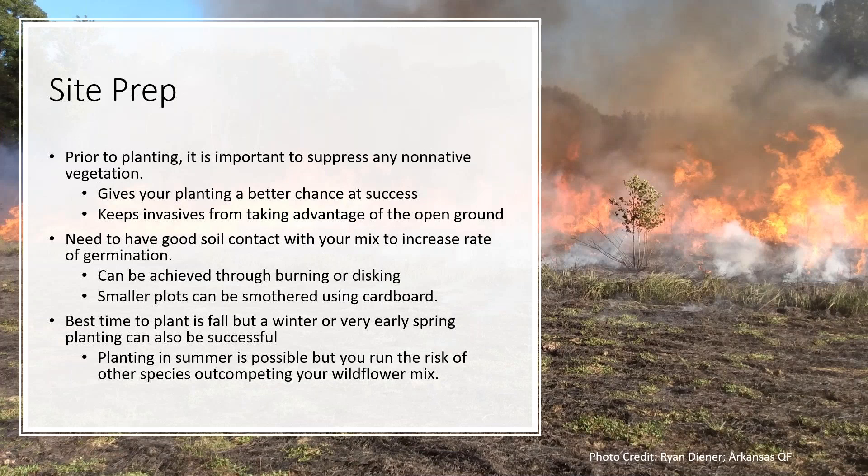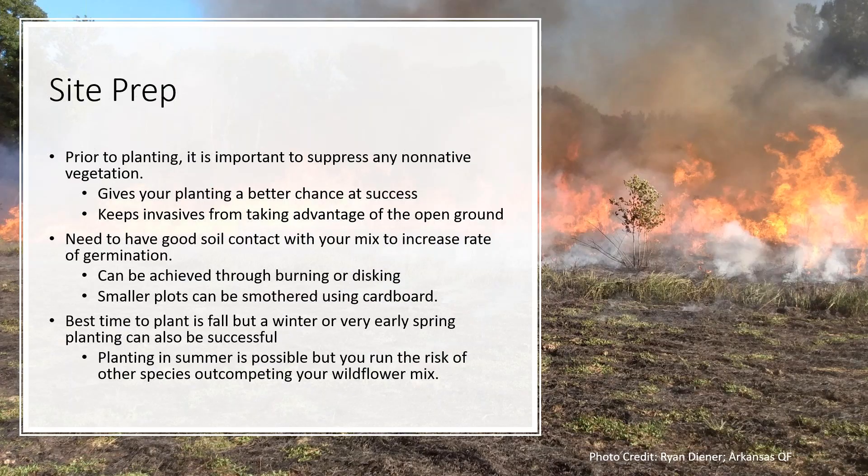Smaller pollinator plantings placed near buildings, walkways, and other human-dominated landscapes can really help aesthetics and provide opportunities for education and increase food sources for pollinators in areas that have really low plant diversity. To plant successfully, you need to suppress any non-native vegetation, giving your planting a better chance at success and keeping invasives from taking advantage of open ground. Good soil contact with your mix increases germination rate, achieved through burning, light disking, or rototilling for larger areas, and smothering with cardboard covered in mulch for smaller garden plots. The best time to plant is fall, though winter or very early spring planting can also be successful.